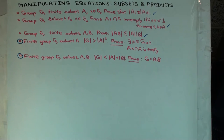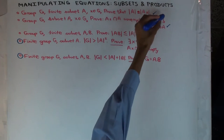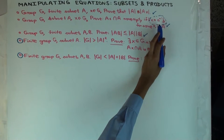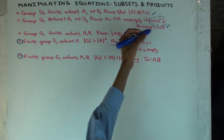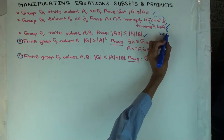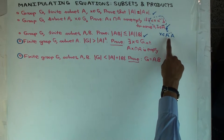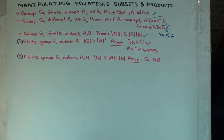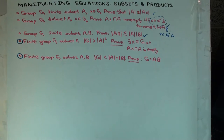So what does it say? AX intersect A is non-empty if and only if X equals A inverse B for some A and B in A. Can you describe that condition in terms of a set condition? What exactly is the set of such X? X should be in A inverse A — that's the set of products of something in A inverted times something in A. So AX intersect A is non-empty if and only if X is in A inverse A.